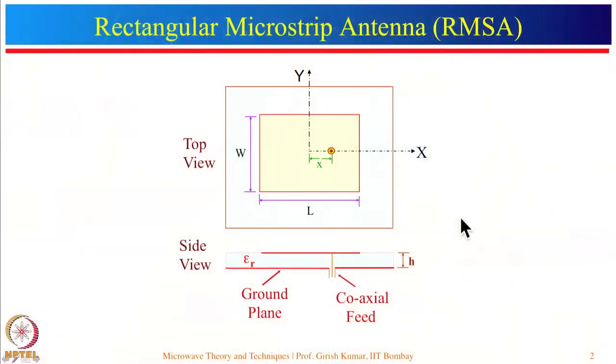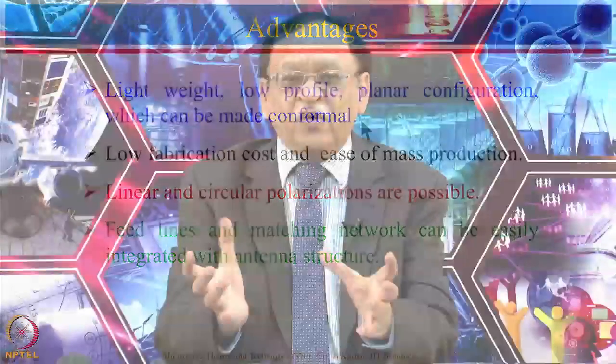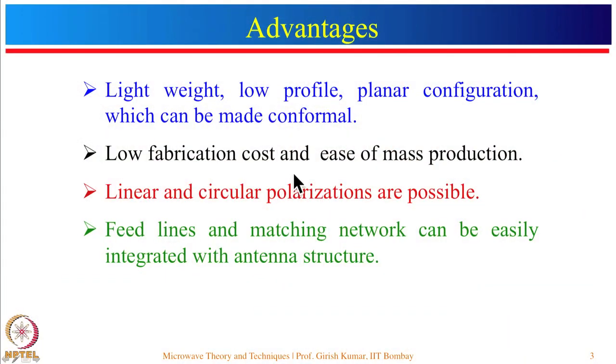The microstrip antenna has a very simple geometry with many advantages: light weight, low profile, planar configuration, and it can be made conformal to a host body such as a missile, helicopter, plane, or satellite. Since it uses PCB technology, fabrication cost is very low and mass production is easy. Both linear and circular polarizations are possible, and feed lines as well as matching networks can be easily integrated with the antenna structure itself.